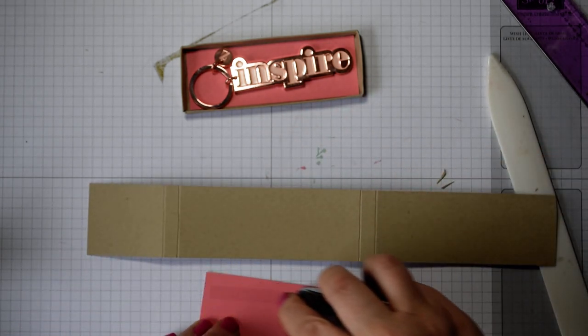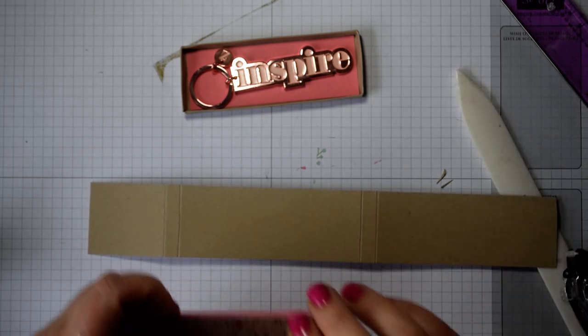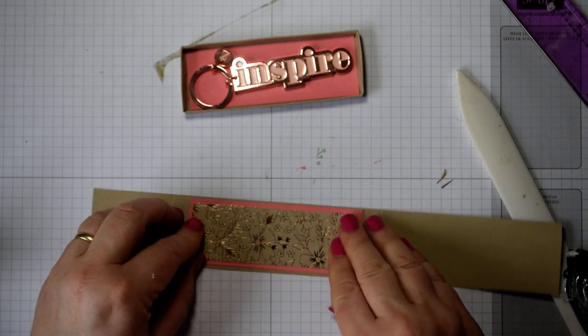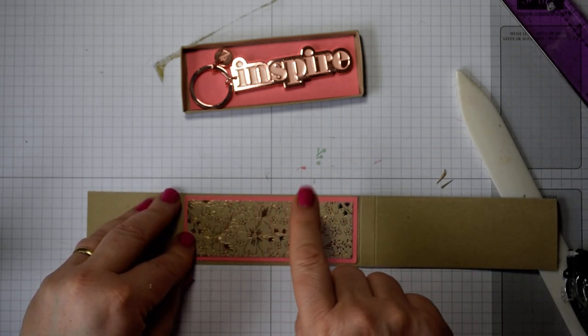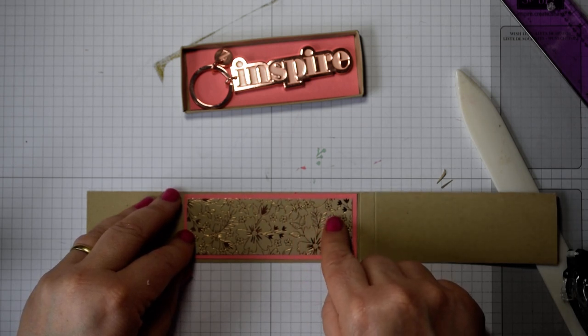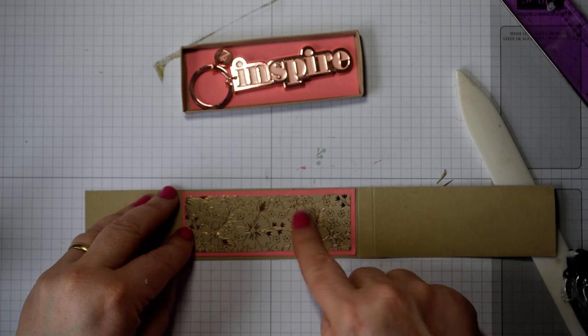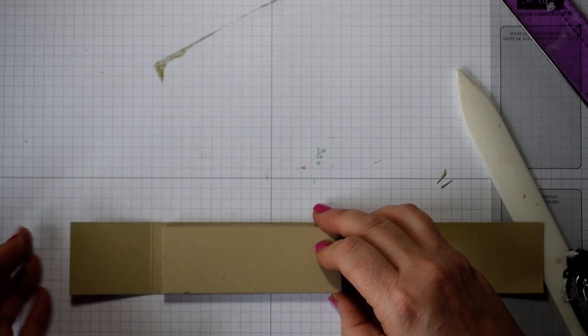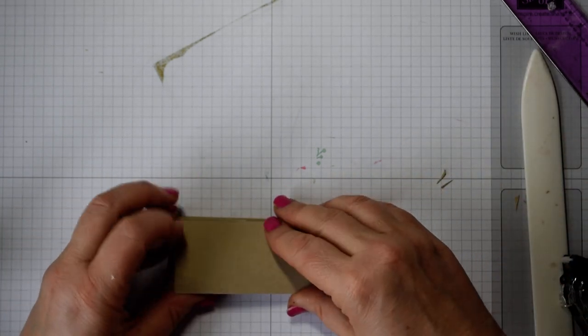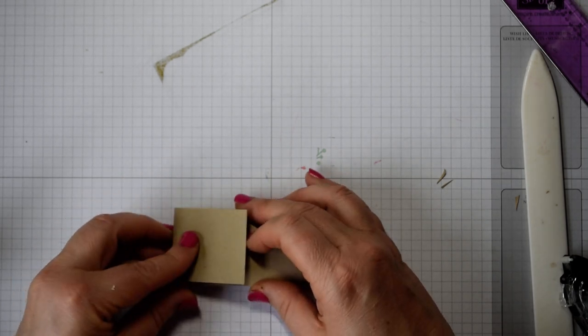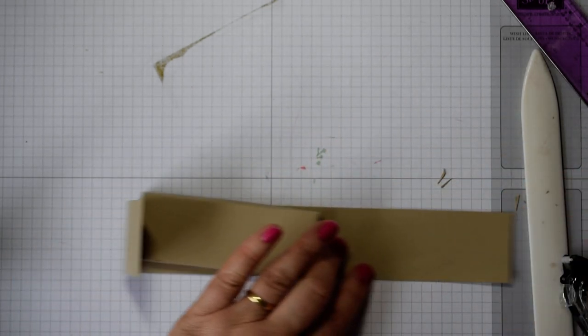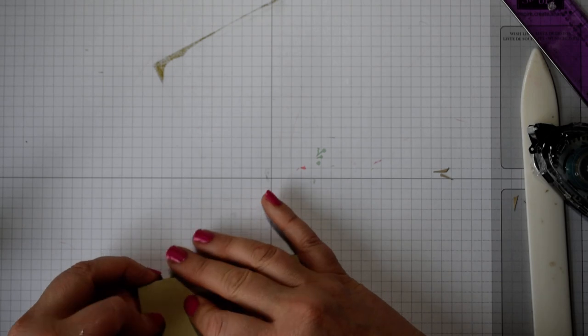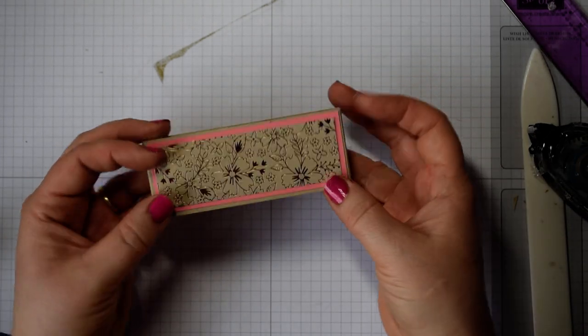Before I actually make the box up, I'm going to add my layers. It's always easier to add onto when it's nice and flat. I've cut a layer of the flirty flamingo, that is 10.8 by 3.8, and then 10.5 by 3.5 is the DSP layer for the top. Once you've done that, I'm going to bring it around the box and keep that nice and tight. Wrap nice and firmly, and I've deliberately kept that with a little ledge so that it is nice and firm.